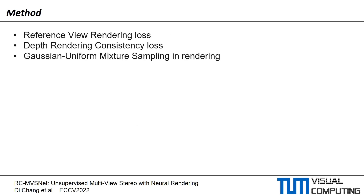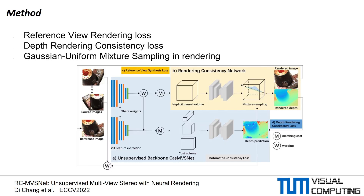To this end, we present our approach RCMVSnet. We introduce a reference view synthesis loss to generate RGB supervision that is able to account for view-dependent photometric effects. We propose a depth rendering consistency loss to refine the initial depth map by depth priors and ensure the robustness and smoothness of the prediction. We also propose Gaussian uniform mixture sampling to learn geometry features close to the object's surface and to overcome occlusion artifacts.